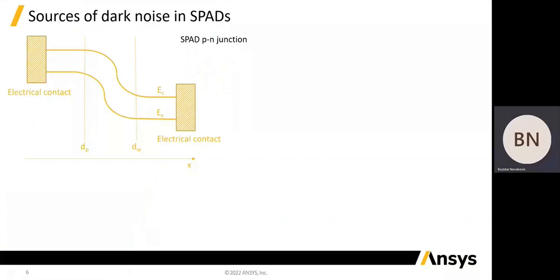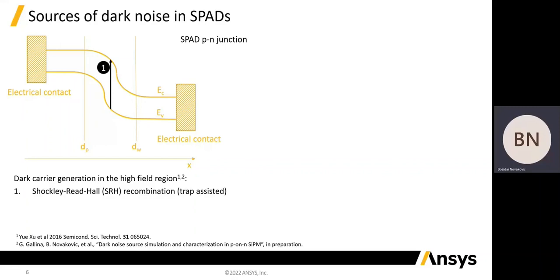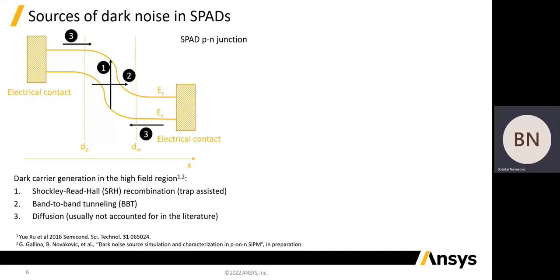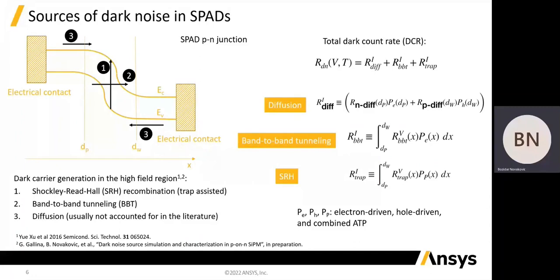To illustrate dark noise sources, we can represent a SPAD with a simple PN junction. The first dark noise source is the Shockley-Read-Hall recombination with trap-assisted tunneling. The second noise source is band-to-band tunneling, and the third noise source is carrier diffusion from quasi-neutral regions into the high-field region. This last source is usually not considered in the literature. The total DCR is the sum of contributions from these three noise sources, where each noise source is modeled as a product of the corresponding generation rate and the avalanche-triggering probability integrated over space.